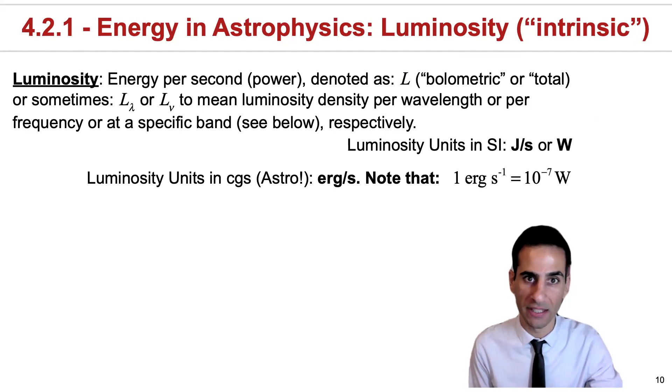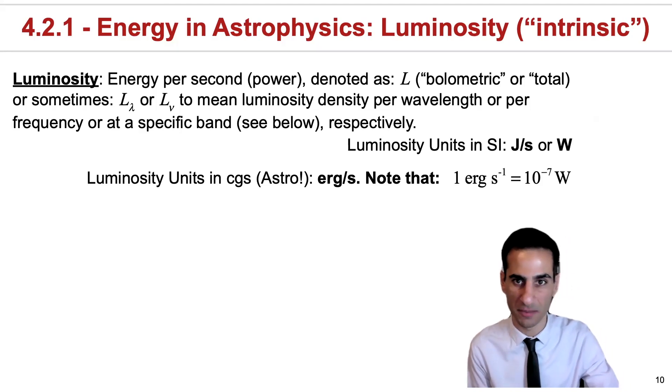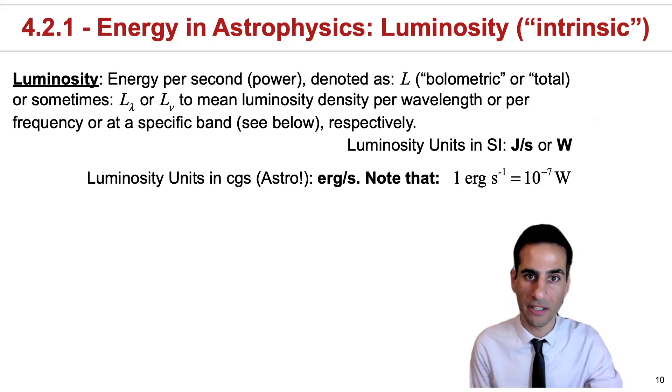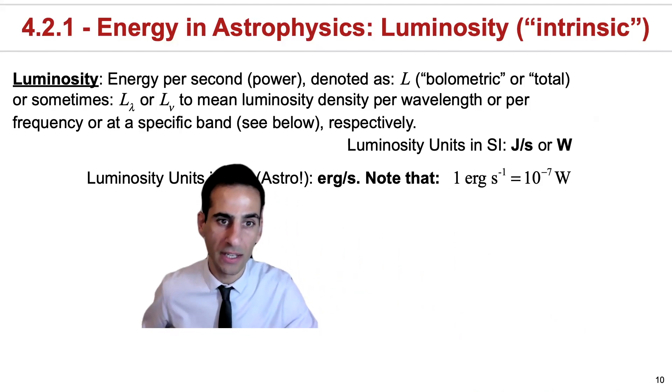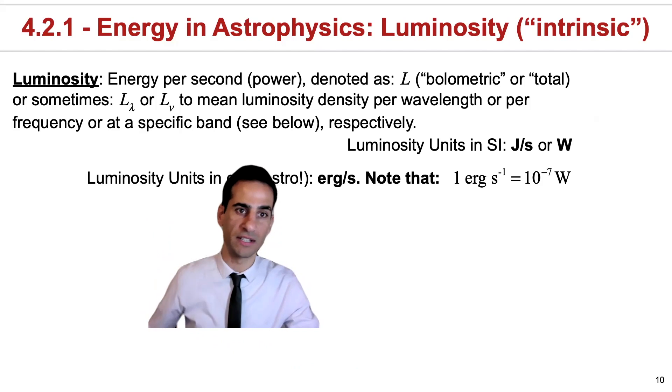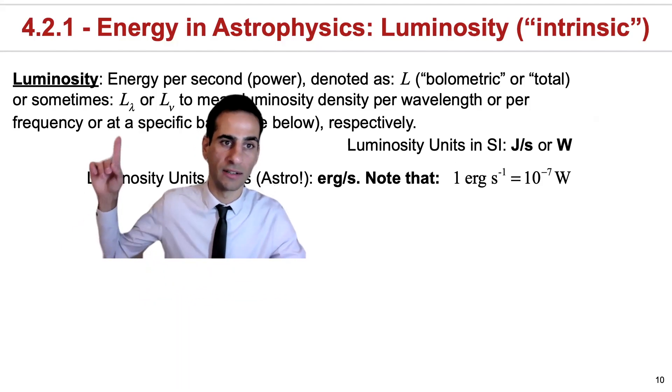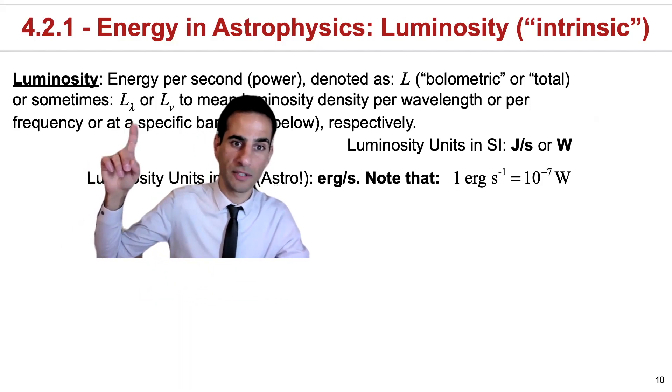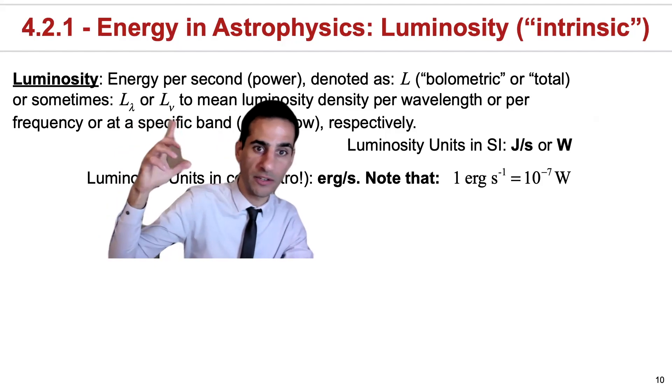Luminosity is something you could call intrinsic. It is defined as energy per second, so this is basically power. Typically when you write L on the top, we are referring to volumetric or total luminosity. This is the reason why sometimes you will actually see subscripts of some wavelength or some frequency.